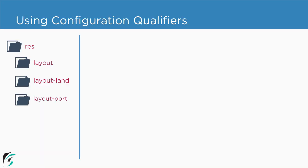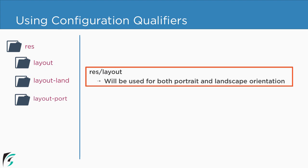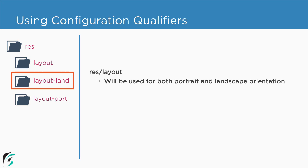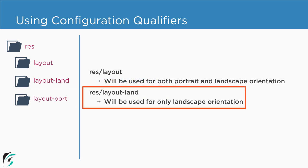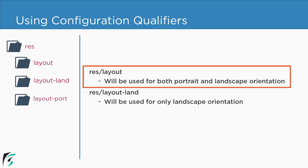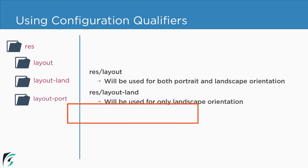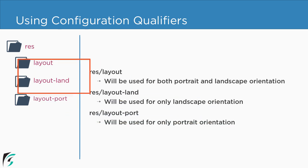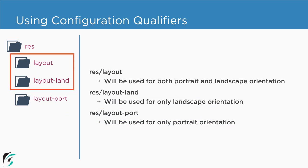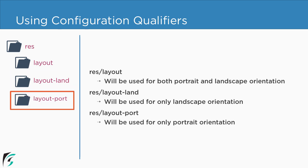We can do this by using configuration qualifiers, which we saw in the previous section. We will have a default layout folder used for both portrait and landscape, then create a layout-land folder used only for landscape. When layout-land exists, the default layout folder is automatically used for portrait. For special customization of portrait, you can also create a layout-port folder, but in most cases layout and layout-land will satisfy our needs, so we don't have to create layout-port every time.